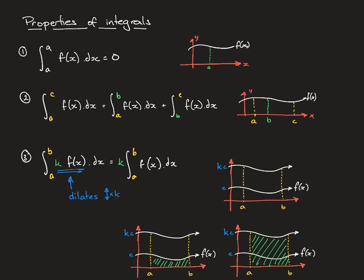If we start with our function and find the area under the curve, then multiply all of our y values by k, we stretch the graph upward and all y values move in the same proportion. So instead of a value being c, it's now kc. Our original area is shown as the small green section, and when stretched up it becomes the large green section — the area increases by a factor of k.